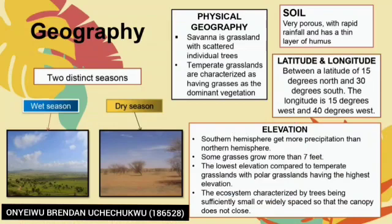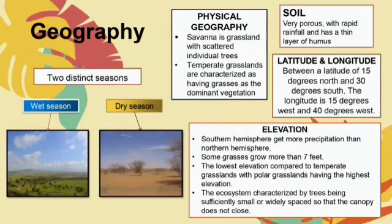I will be presenting about the geography of tropical grassland and savannas. There are two distinct seasons: the wet season and the dry season. The savanna is a grassland with scattered individual trees. Temperate grasslands are categorized as having grasses as the dominant vegetation. The soil is very porous with rapid rainfall and has a thick layer of humus.